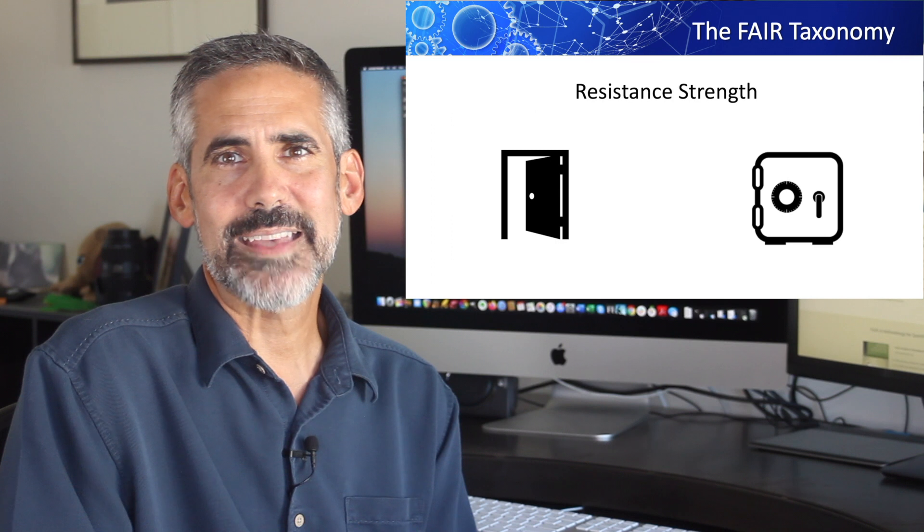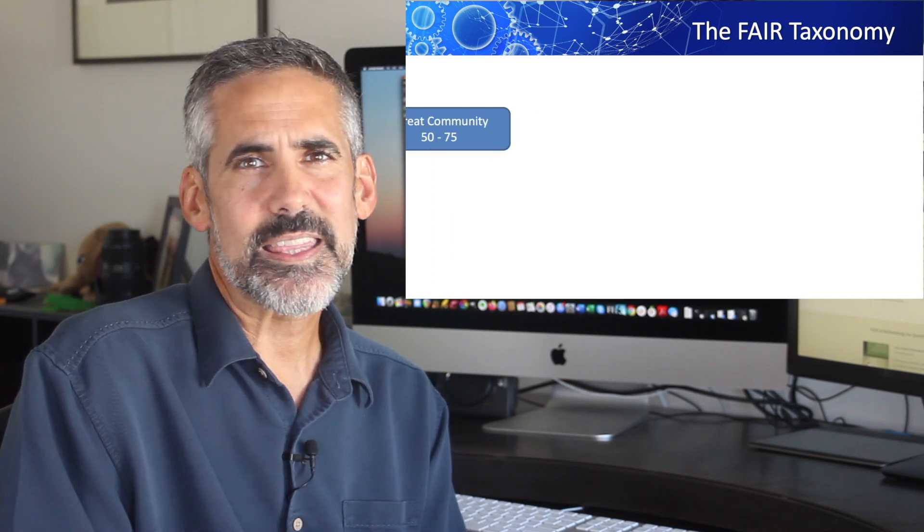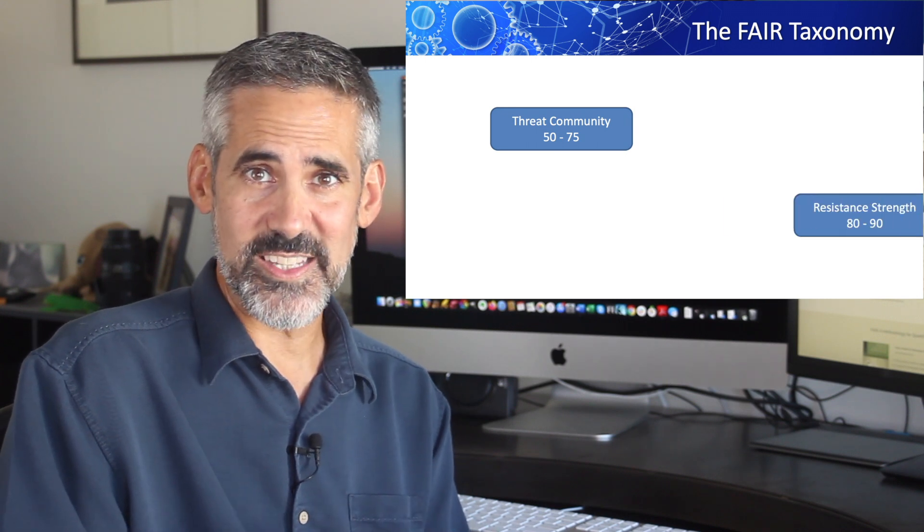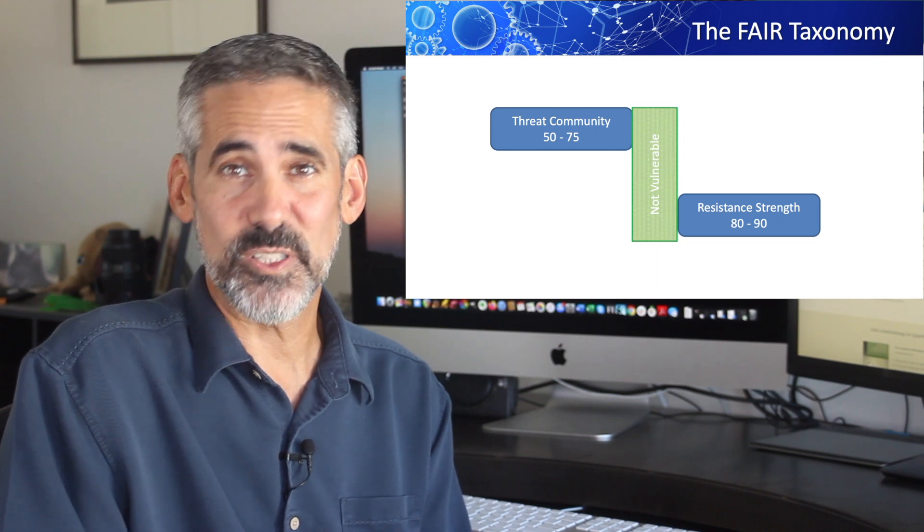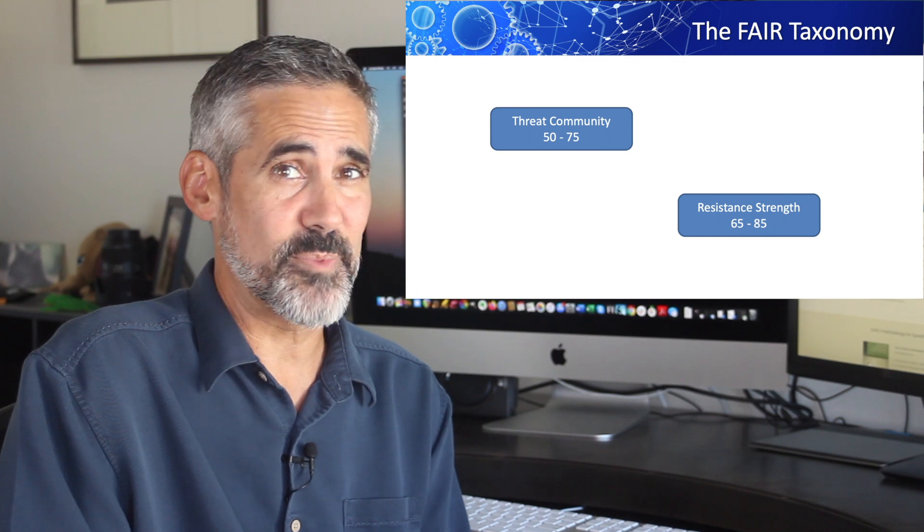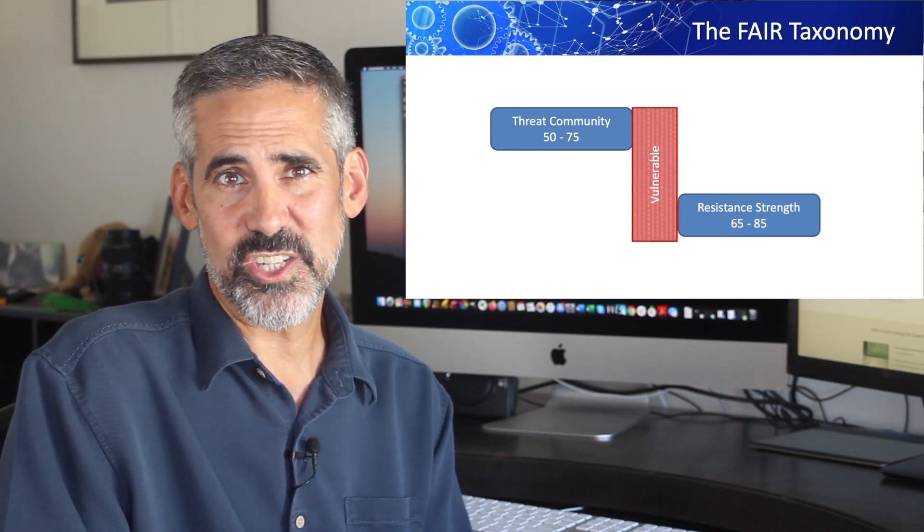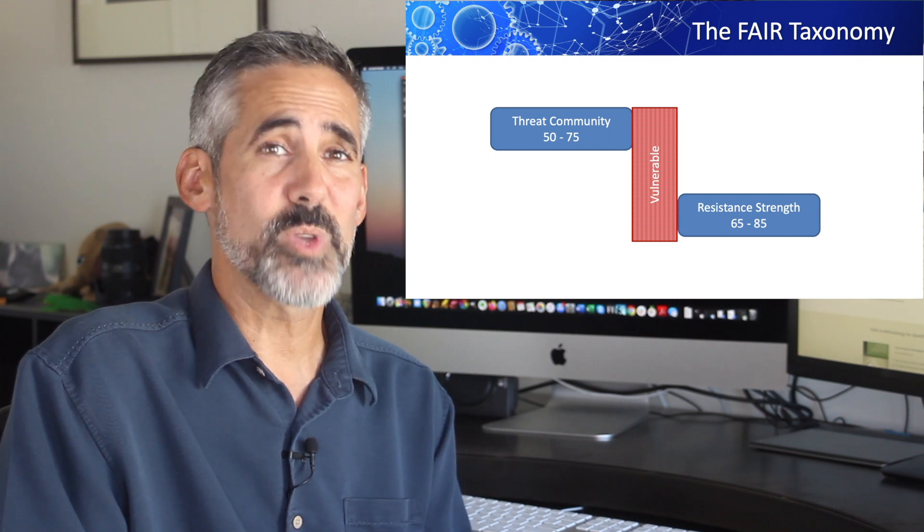So we may estimate the threat community under analysis as being in the 50th to 75th percentile. If our resistance strength is estimated to be between 80% and 90%, the threat actors will never be successful. Now if our resistance strength is from 65% to 85%, however, we see there's some overlap. So a series of simulations using Monte Carlo techniques will allow us to estimate how vulnerable we are.